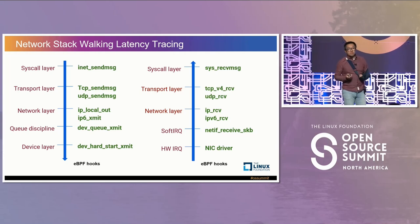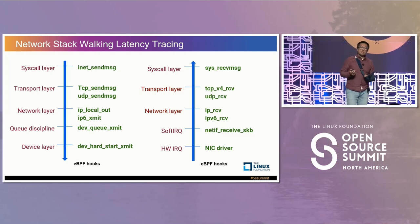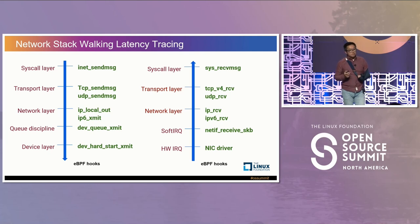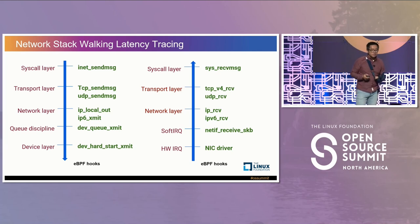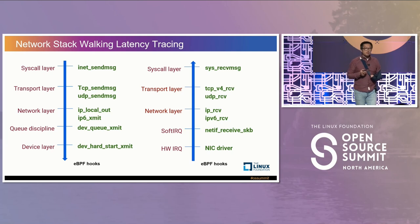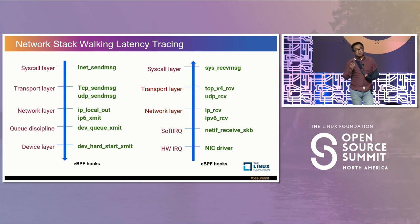We provide our customers network latency in detail. However, we are also interested in latency questions in greater depth — for example, what is the software overhead in the latency, and which network layers contribute most to it? So we select key functions for each network layer and calculate their running time as the latency for that layer. In that way, we can view latency from the layer dimension. The figure shows the functions we selected for each layer on the two network paths.